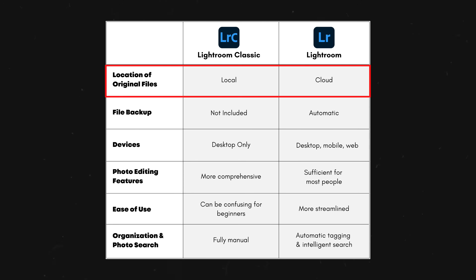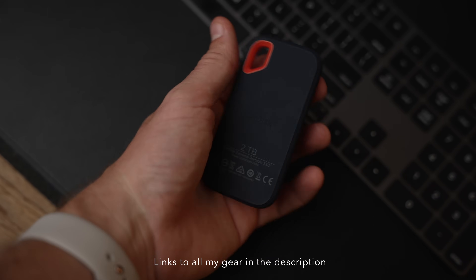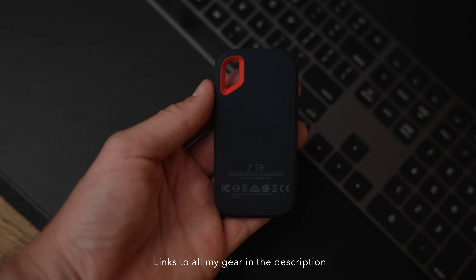Let's talk about the main differences between Lightroom Classic and Lightroom. Well, the main difference is basically where your original photos are stored. With Lightroom Classic, you must store all of your photos locally — so that means either on your computer or on an external hard drive. For me personally, I store all of my images on a SanDisk two terabyte SSD. After I come home from a shoot, I upload them onto this and then I import them into Lightroom, so the originals always stay on this.